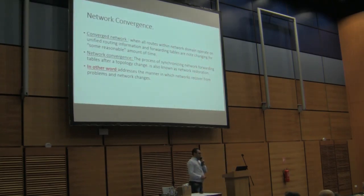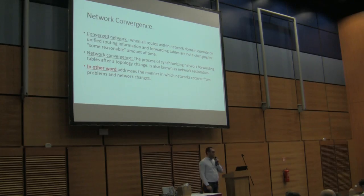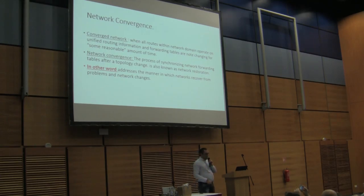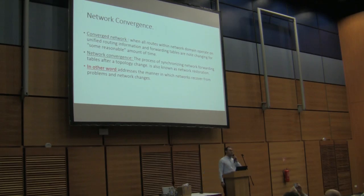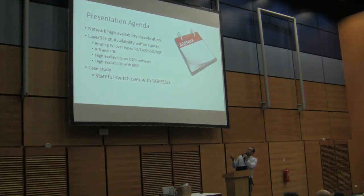One more thing we need to discuss is network convergence. When we talk about dynamic routing protocols, they start to establish neighbor relationships, exchange routing information, and then all agree to work on a unified routing table. This is a converged network. Network convergence refers to when a topology change happens and how long it takes to restore the network back to normal operation — in other words, how the network recovers from a problem.